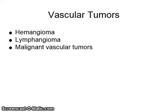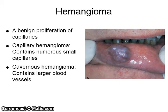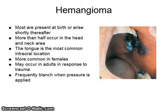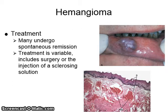Vascular tumors include hemangioma, lymphangioma, and malignant vascular tumors. Hemangioma is a benign proliferation of capillaries. Capillary hemangioma contains numerous small capillaries; cavernous hemangioma contains larger blood vessels. Most hemangiomas are present at birth or arise shortly thereafter, and more than half occur in the head and neck area. The tongue is the most common intraoral location. It is more common in females and may occur in adults in response to trauma. They frequently blanch when pressure is applied. Treatment may include spontaneous remission, surgery, or the injection of a sclerosing solution.